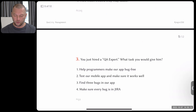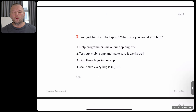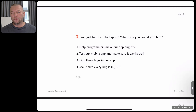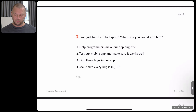In the entire course, you're the person in charge of managing. Question three: you just hired a QA — quality assurance — expert. What task would you give that person? Option one: help programmers make our application bug free. Option two: test our mobile app and make sure it works well. Option three: find three bugs in our app. Option four: make sure every bug is in JIRA — every bug is properly reported. Which do you think is the right task for a QA expert? Maybe you are or were a QA expert, so this question may correlate with your experience.